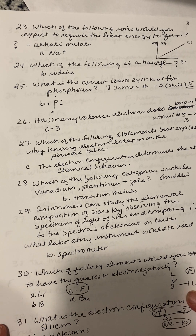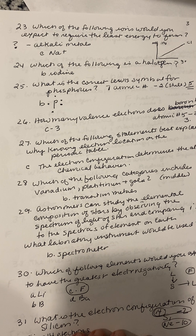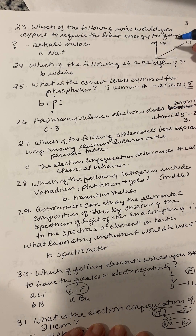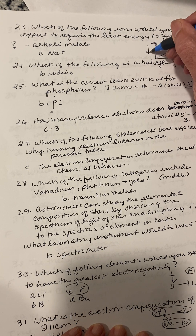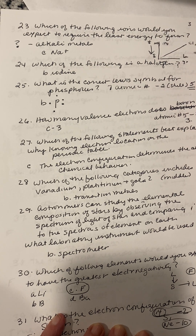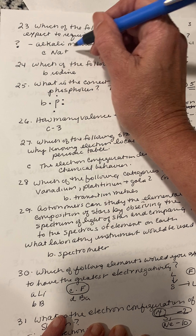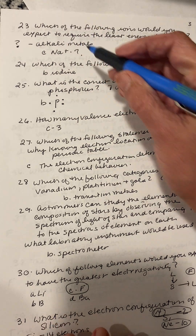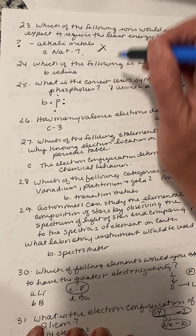Number twenty-three: which of the following ions would you expect to require the least energy to form in alkali metals? The chart goes from large to small, then back to large. Looking at the answer, it would basically be sodium. Look at your question carefully — I think I may have copied that one wrong.